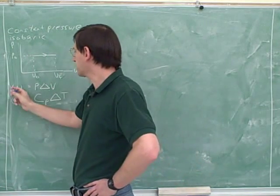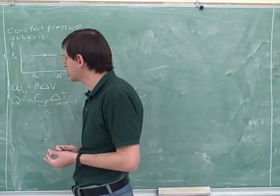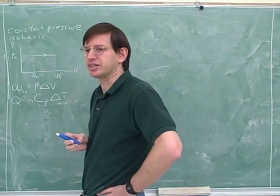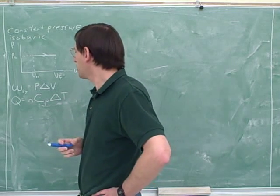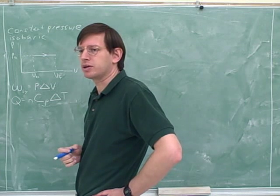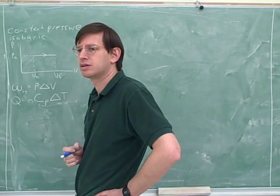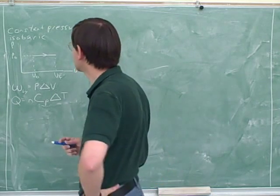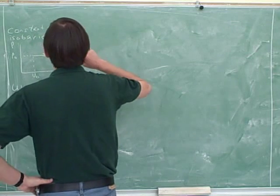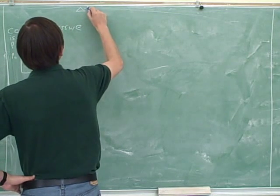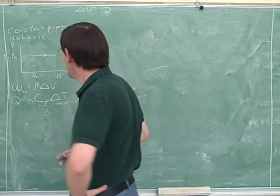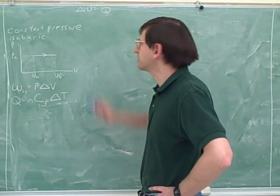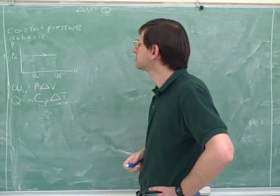So now we know how to find the work that's done in the isobaric process and how to find the heat exchange. The other thermodynamic variable that you've seen is the delta U. Well, how would we find the delta U here? If we know the W and the Q, how would we find the delta U? We would add Q and W or subtracting it. Right?